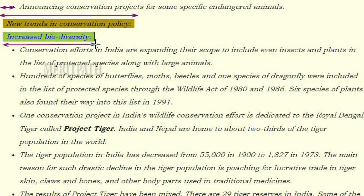Conservation efforts in India have expanded their scope to include insects and plants in the list of protected species, along with large animals. Hundreds of species of butterflies, moths, beetles, and one species of dragonfly were included through the Wildlife Acts of 1980 and 1986. Six species of plants also found their way into the protected list in 1991.